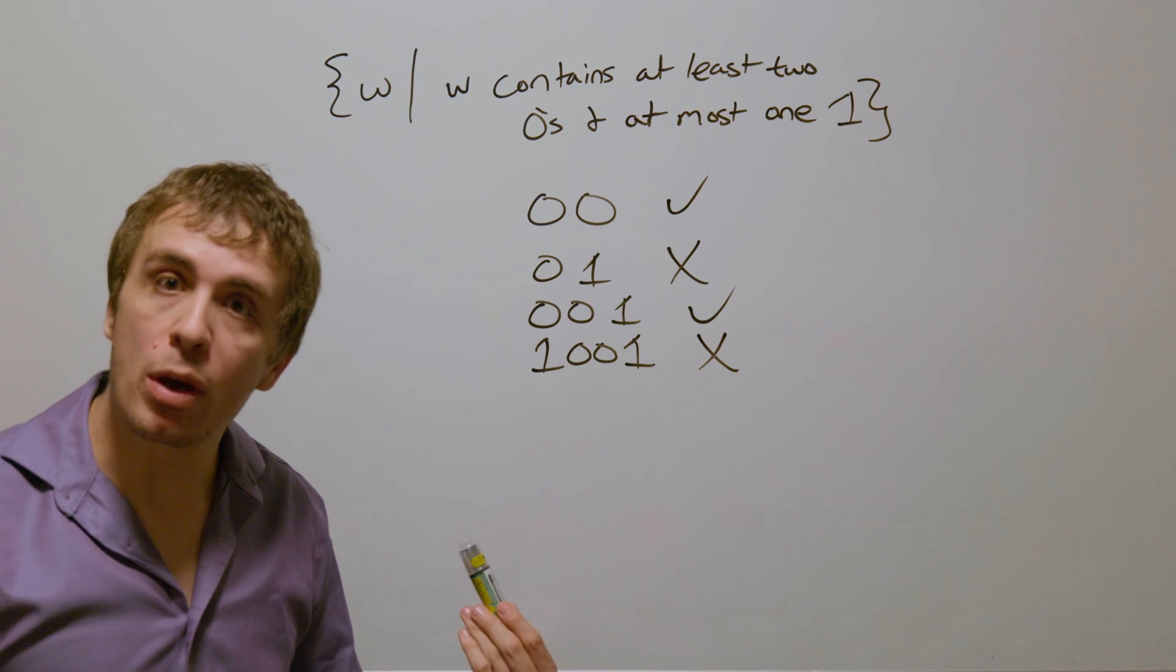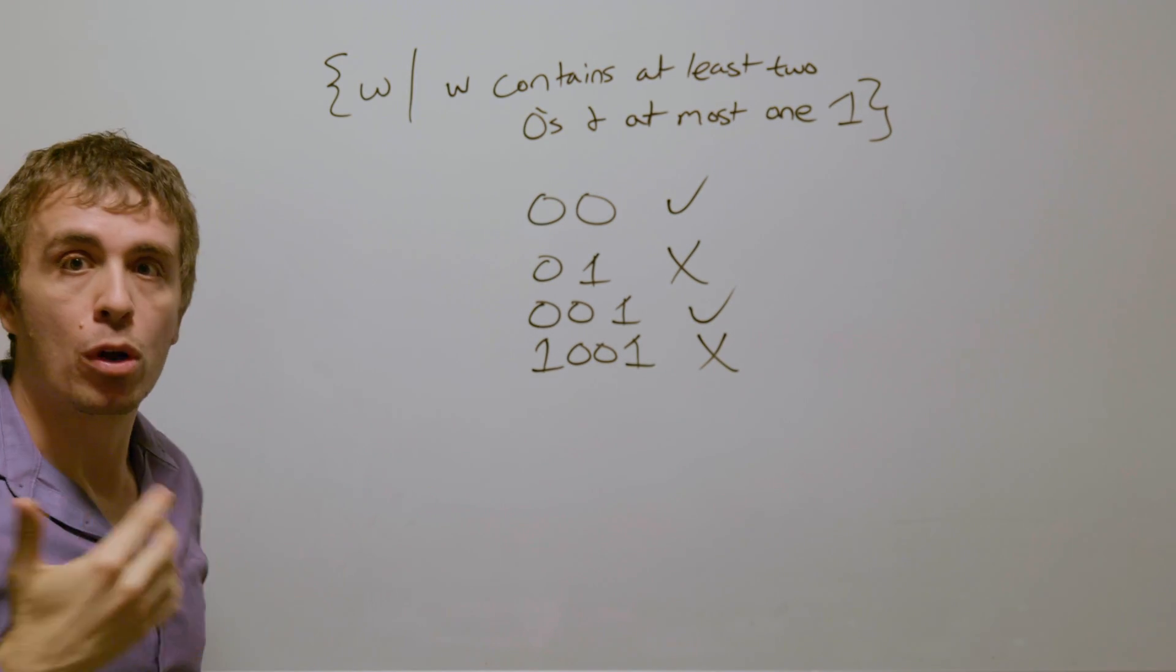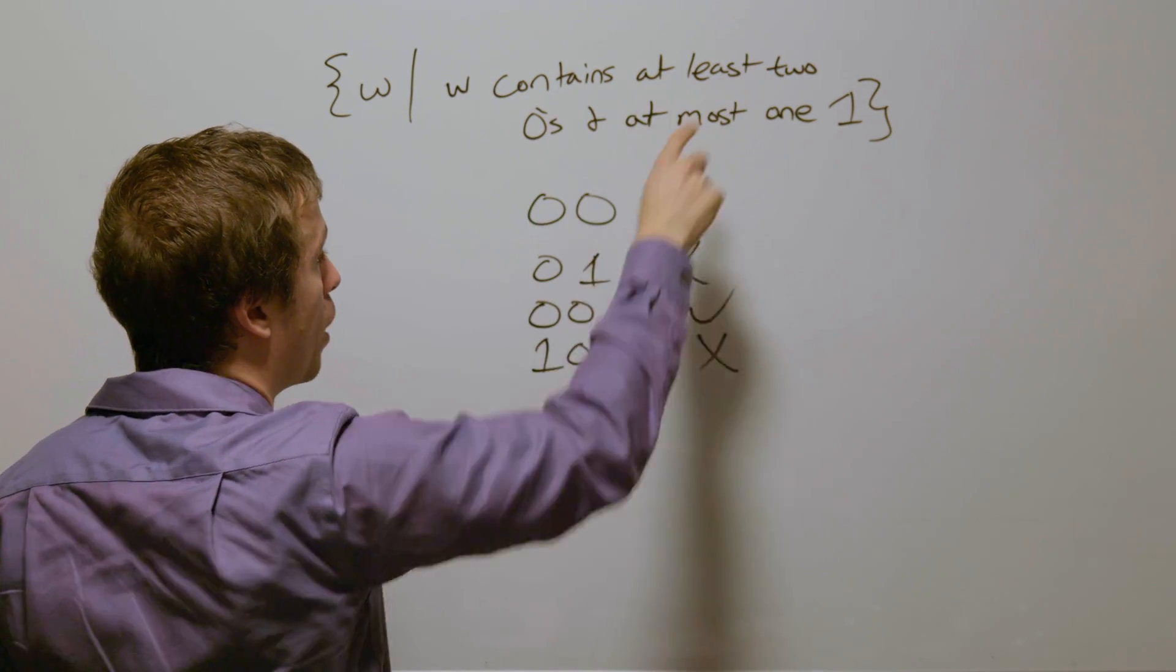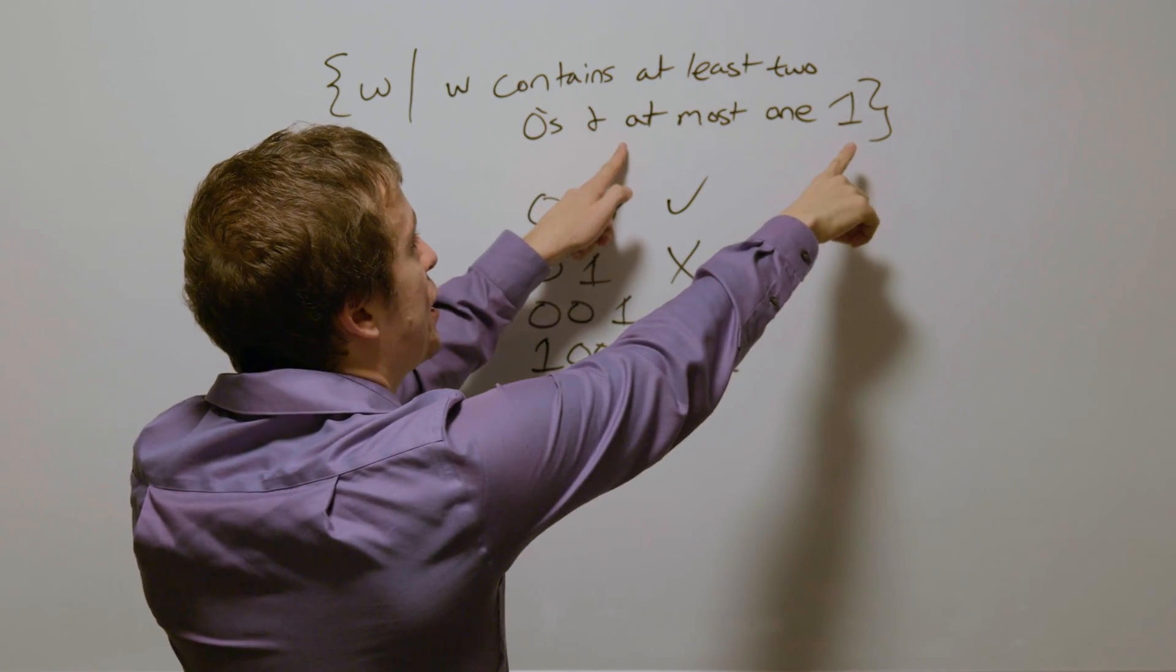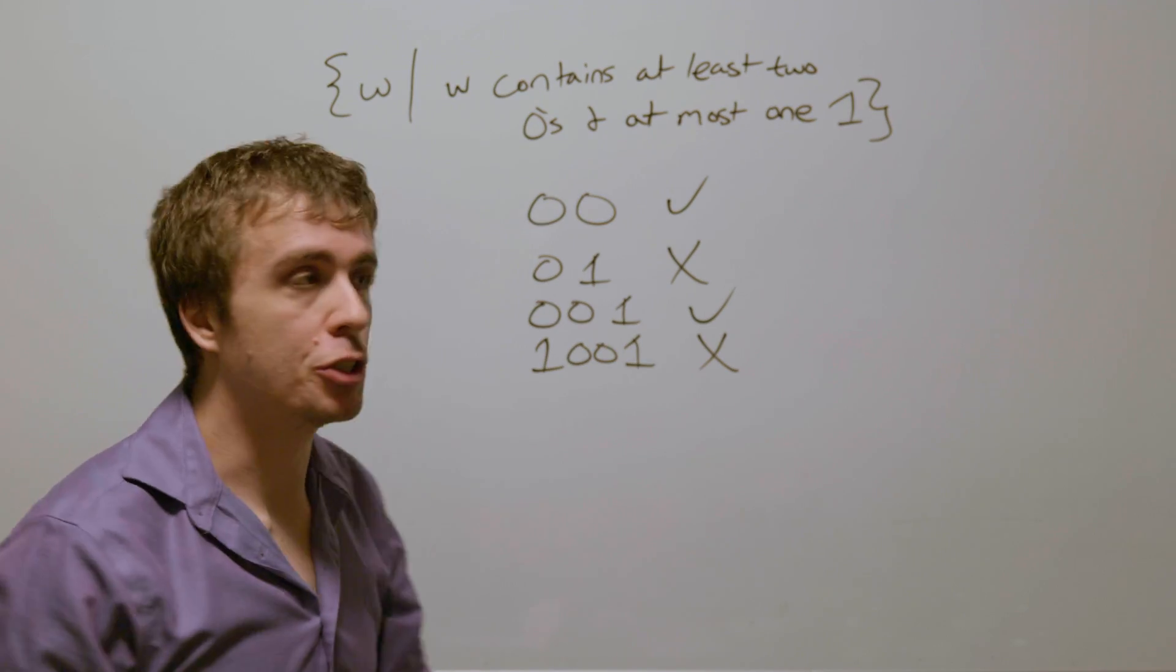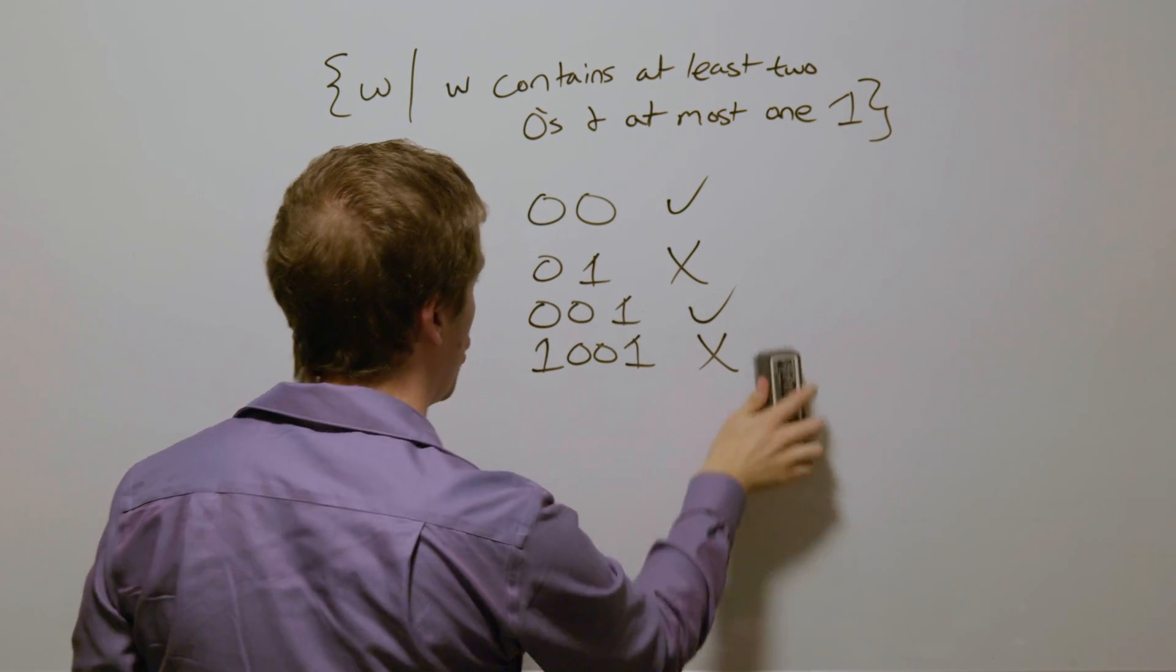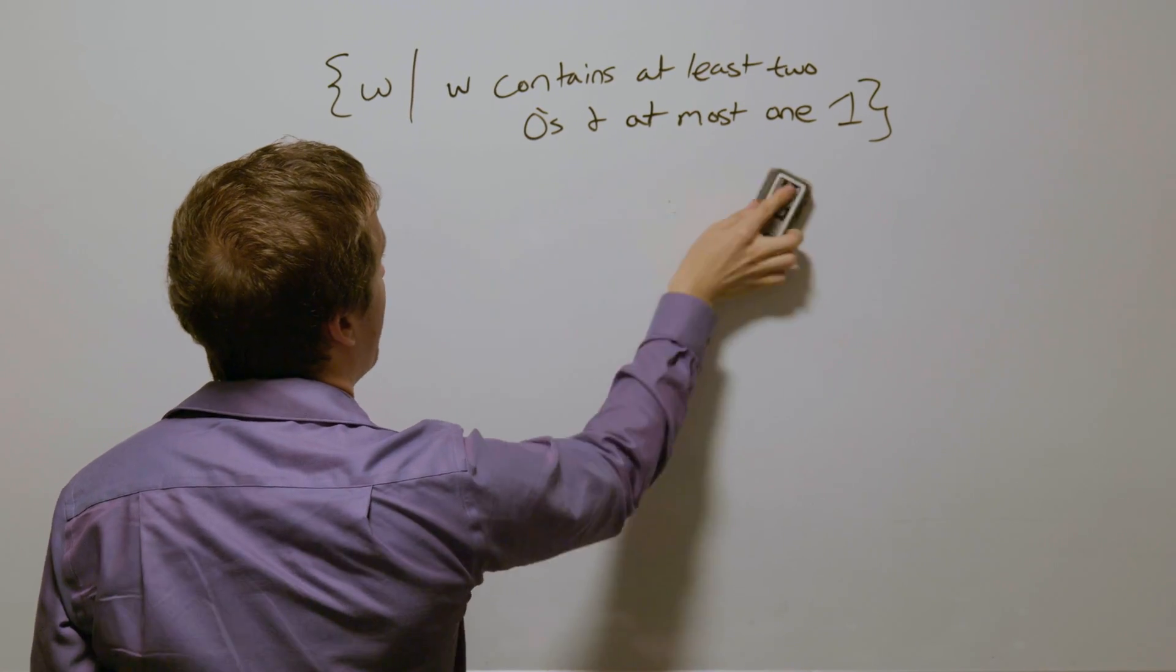So how are we going to approach this? Well, one way that we're going to try is to make a DFA for the first part, make a DFA for the second part, and use the product construction because we got this and going on in between. So let's make those two DFAs.